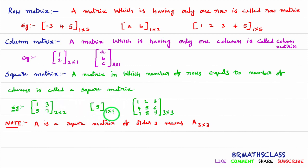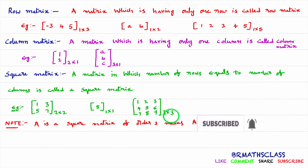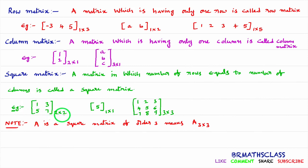Observe this matrix of order 1 by 1: one row and one column. It is a square matrix because number of rows equals number of columns. One important note: when we say A is a square matrix of order three, it means the number of rows and number of columns are both equal to three. We can say a matrix of order 2 by 2 is a square matrix of order two, a 1 by 1 is square matrix of order one, and a 3 by 3 is square matrix of order three. We use this notation frequently while doing exercise problems.